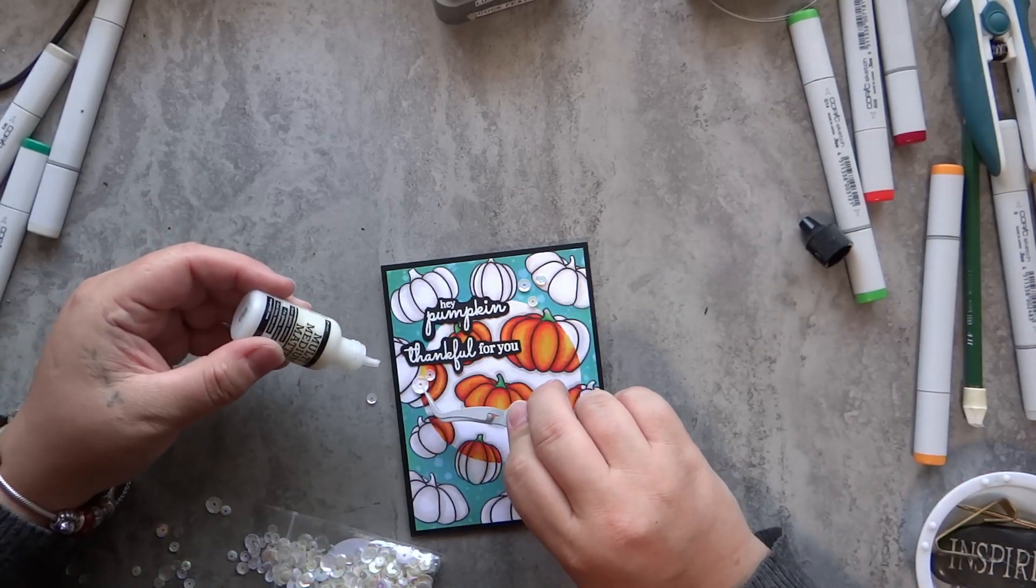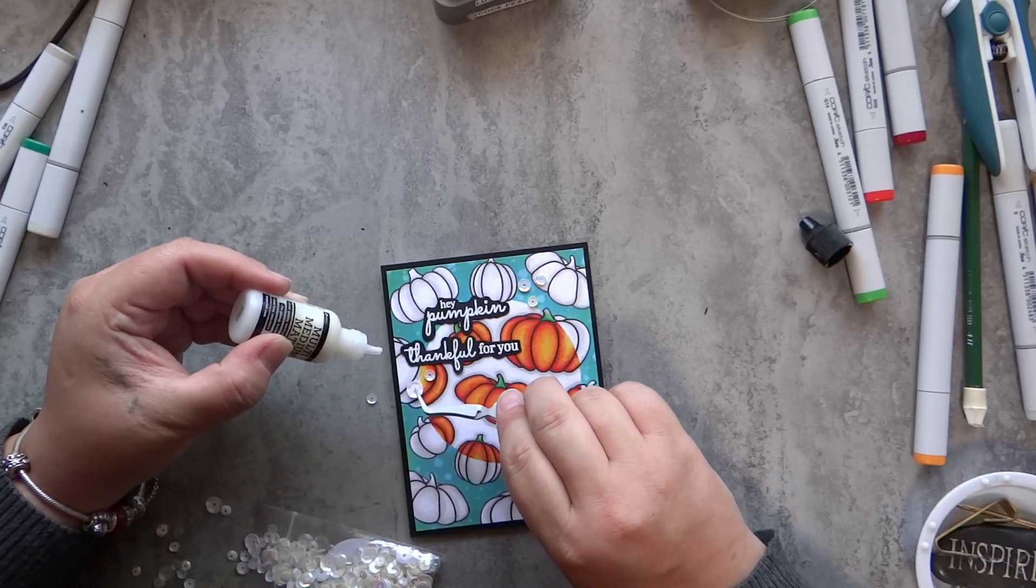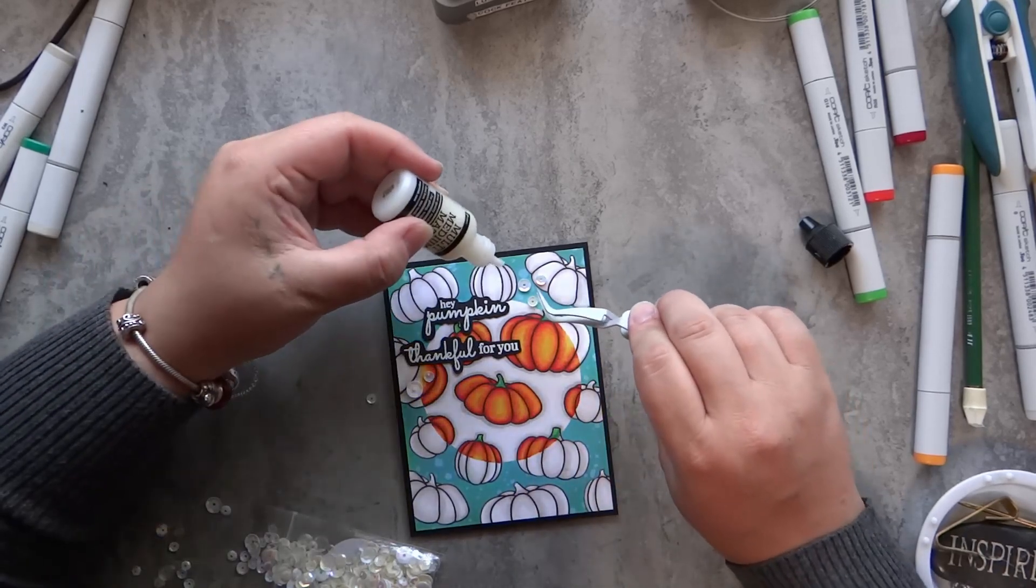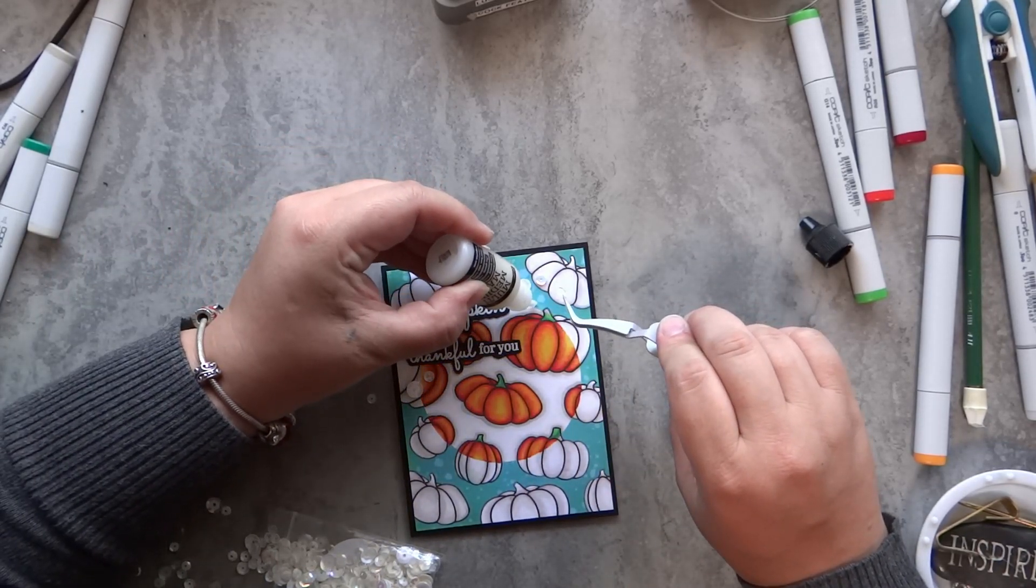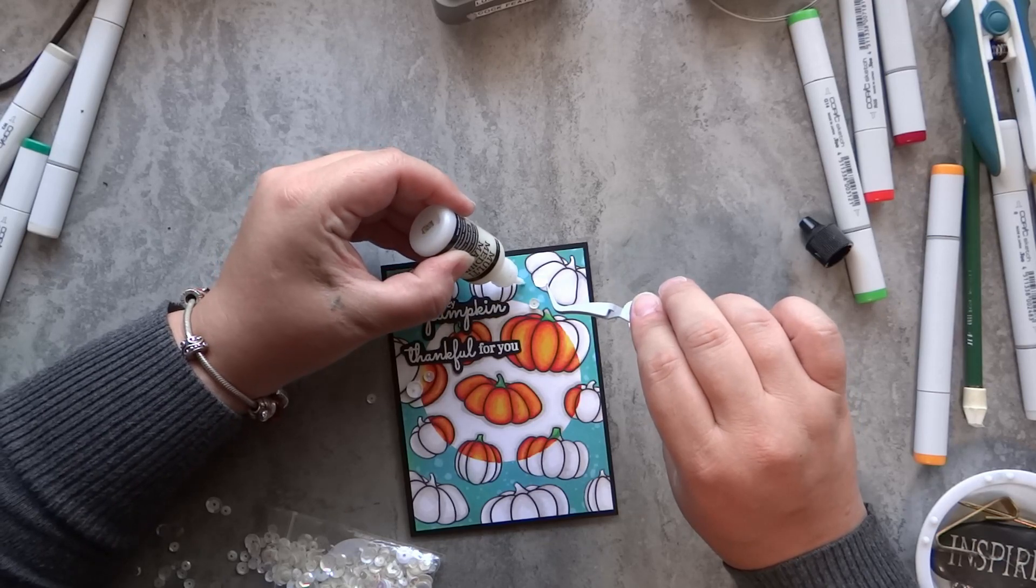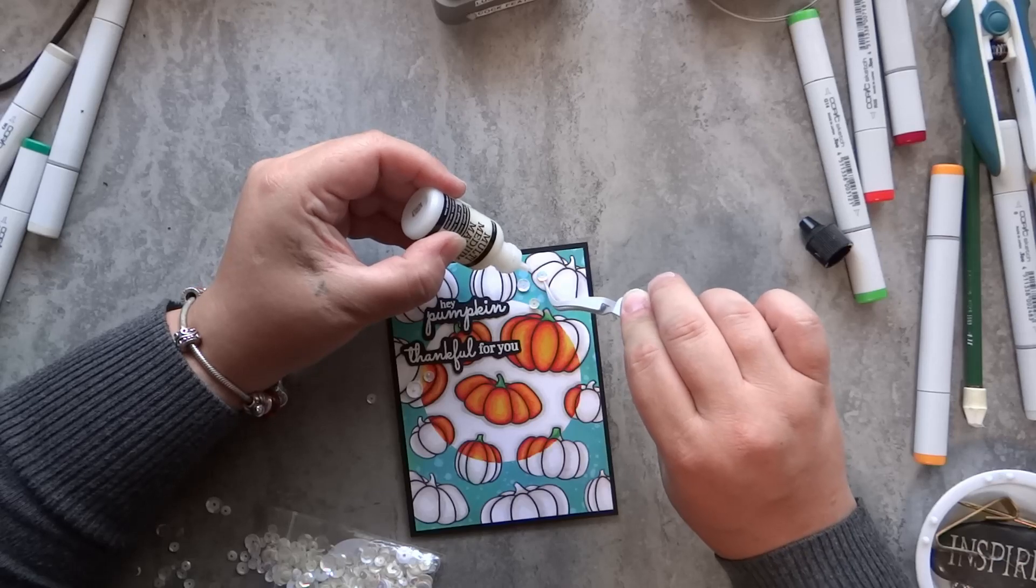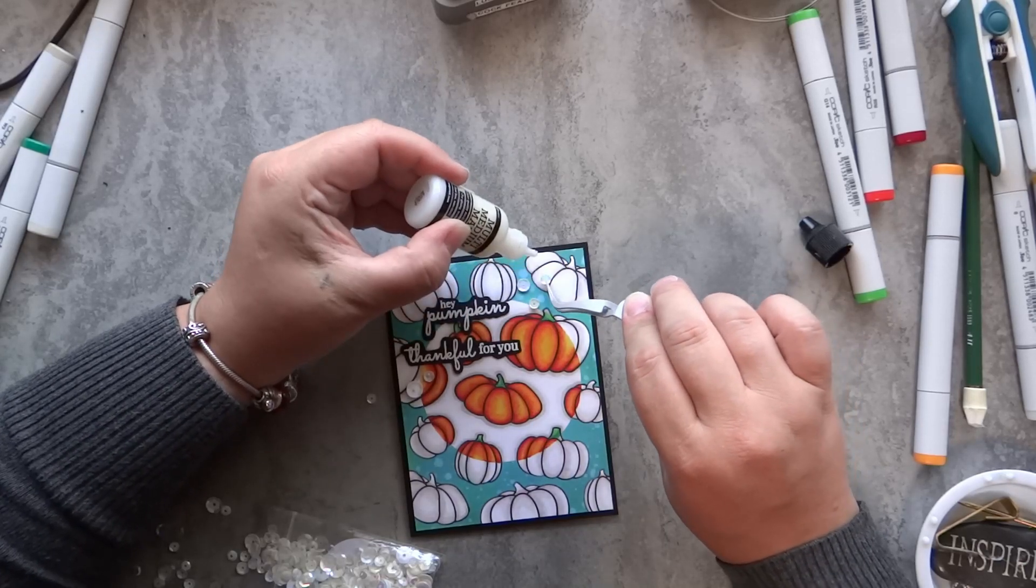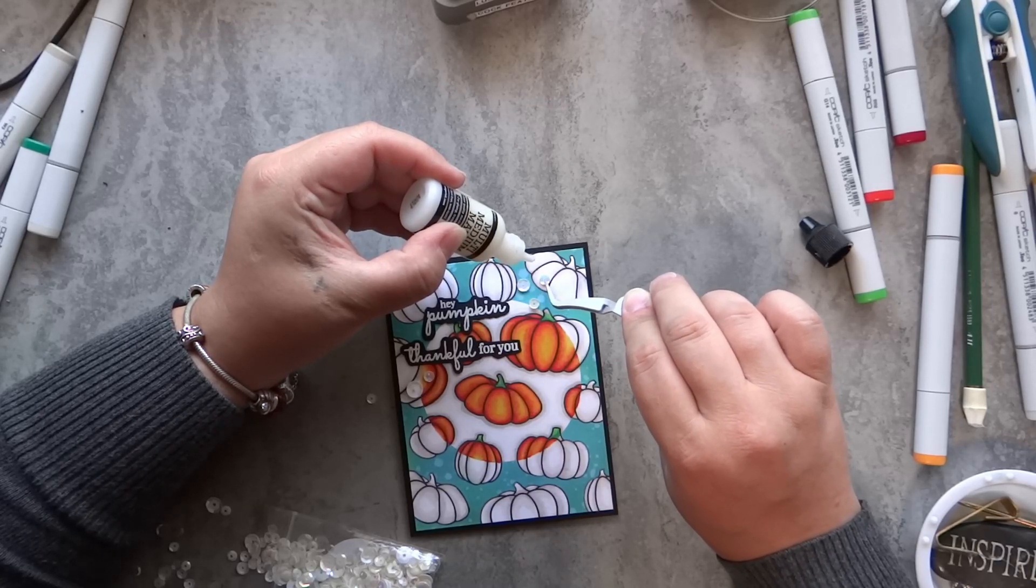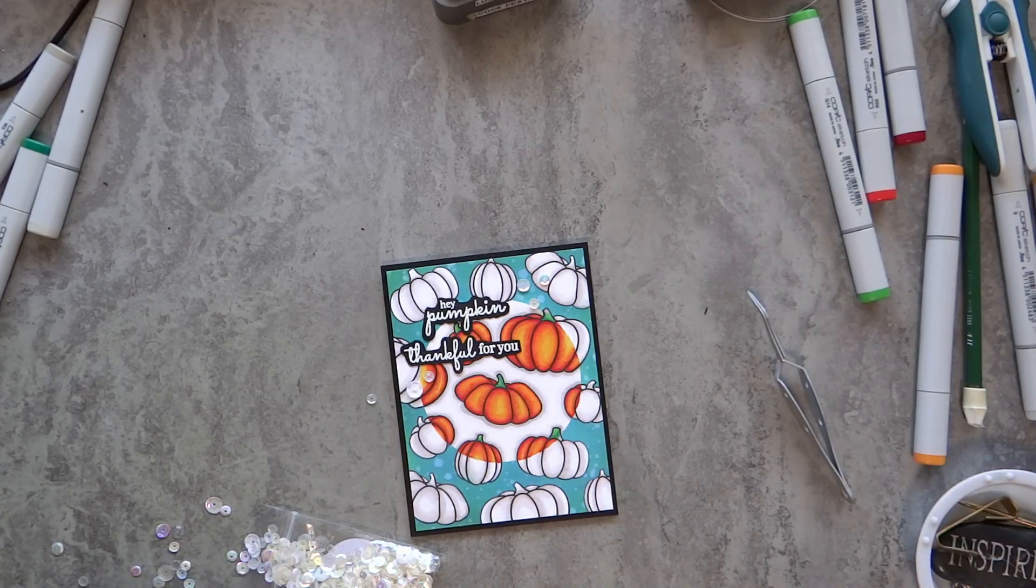I do like the black around the edges though, and it really sets off those black sentiments and the black lines of those pumpkins. Now I can adhere the sentiments using some liquid glue and tweezers so that I get the perfect placement. I also couldn't help myself and added a few sequins around the sentiments from the Possum Stamps Dreamy Days Sequins Pack. These are some really pretty iridescent white sequins. They also have flat white and a couple more clear white sequins too. And there you have it, an inverted spotlight colored background full of cute pumpkins.